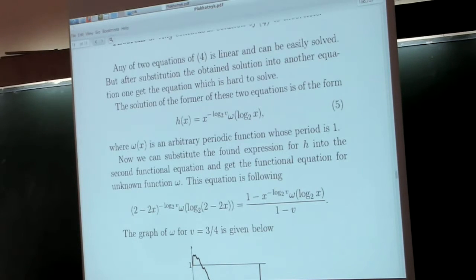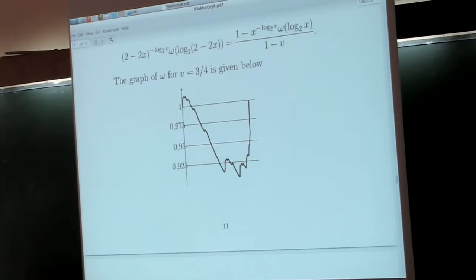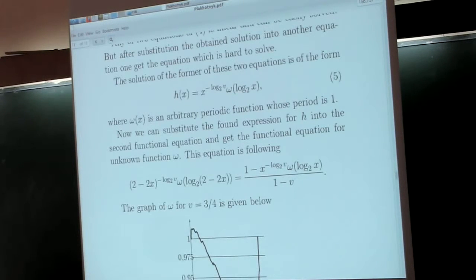If we solve the first equation, we get H(x) = x^(something) times omega(log_2(x)), where omega is a periodic function with period 1. If we put this formula into the second equation, we get a functional equation that is not linear. There is no theory for finding solutions to such equations. This problem did not lead us to get an explicit formula. Nevertheless, we have found H numerically, and with formula 5, we can also find omega numerically.